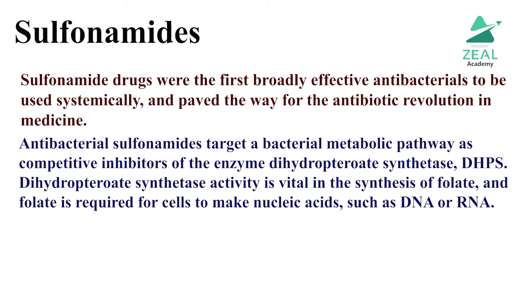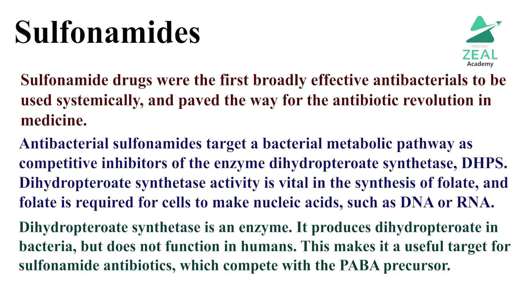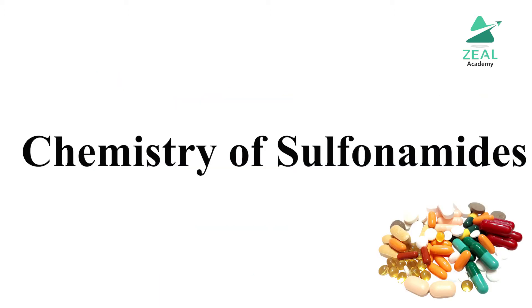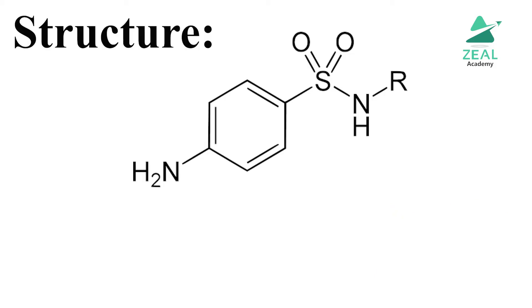DHPS activity is vital in the synthesis of folate, and folate is required for the cells to make nucleic acids such as DNA or RNA. Dihydropteroate synthetase is an enzyme that produces dihydropteroate in bacteria but does not function in humans, making it a useful target for sulfonamide antibiotics, which compete with the para-amino benzoic acid precursor.